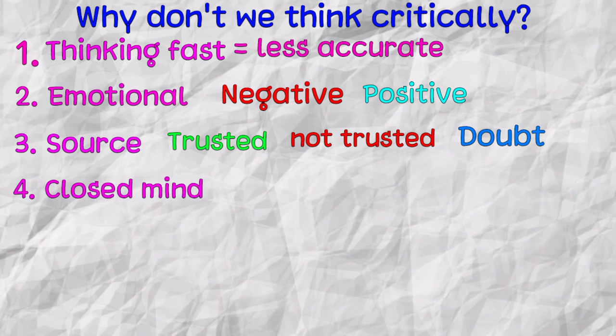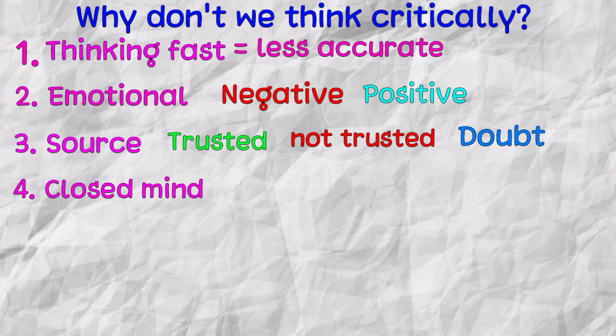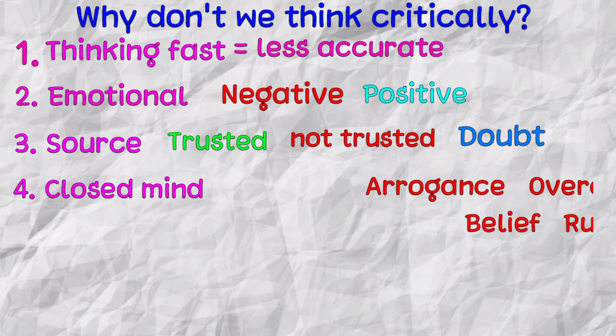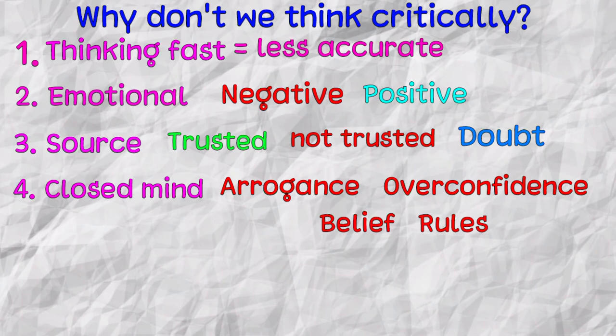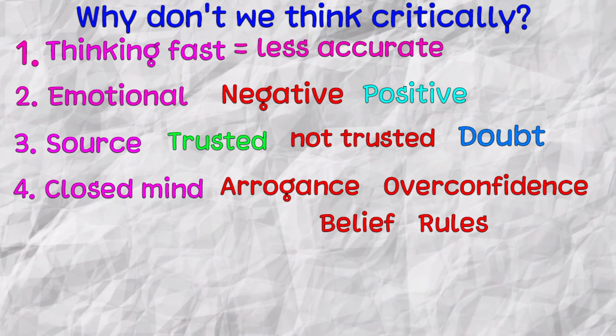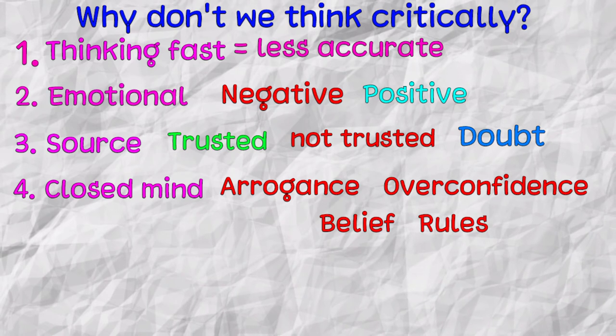Fourth is being close-minded. Close-minded mindset can be caused by arrogance, overconfidence, beliefs, and other society rules that limit our thinking. A common example could be that you are told to listen and believe elders' beliefs without questioning, as questioning is seen as disrespect for elders.